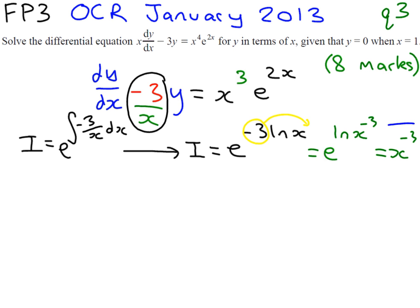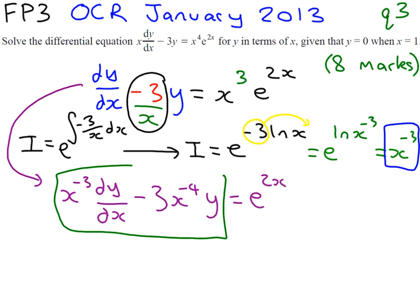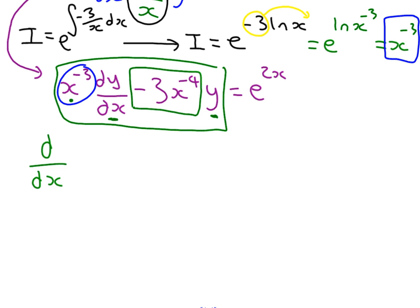What we have just found is what we need to multiply the whole equation by, to put it in the correct form. So we multiply the whole equation by x to the minus 3. We get x to the minus 3 dy/dx minus 3x to the minus 4 times y equals e to the 2x. The left-hand side is now the result of the product rule — we have a function and its derivative and another function and its derivative, which works this time. So the left-hand side is simply the differential of x to the minus 3 times y.